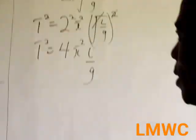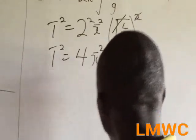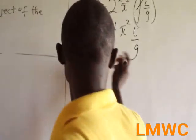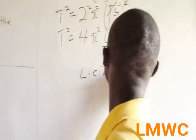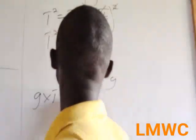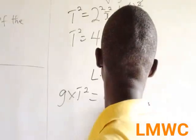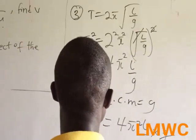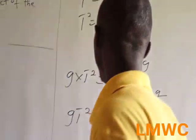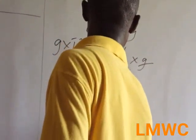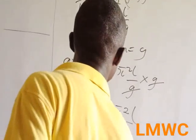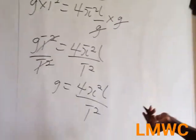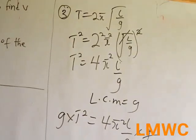But you have been asked to express j in terms of the relation, which means make j the subject. The LCM is j. So it becomes j times t² = 4π²l/j times j. This will cancel, so j·t² = 4π²l. We want to make j the subject, so we divide through by t². So j = 4π²l over t².